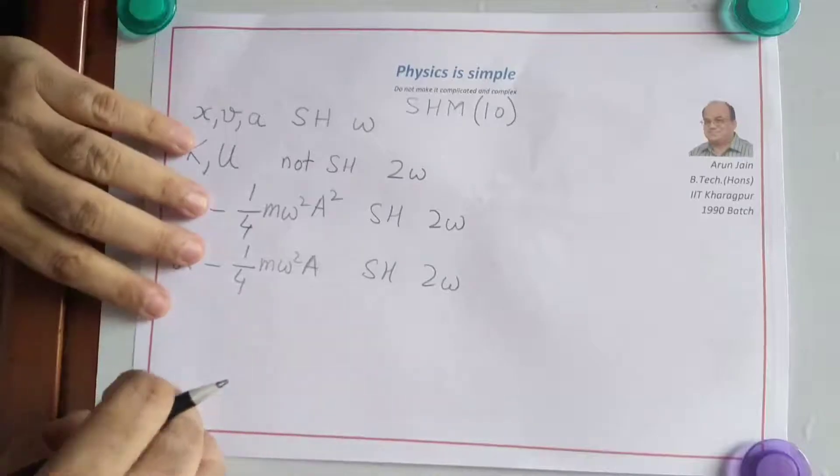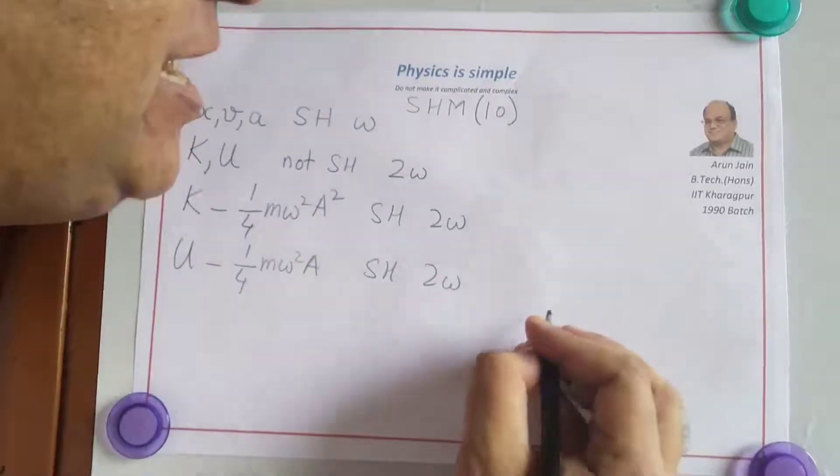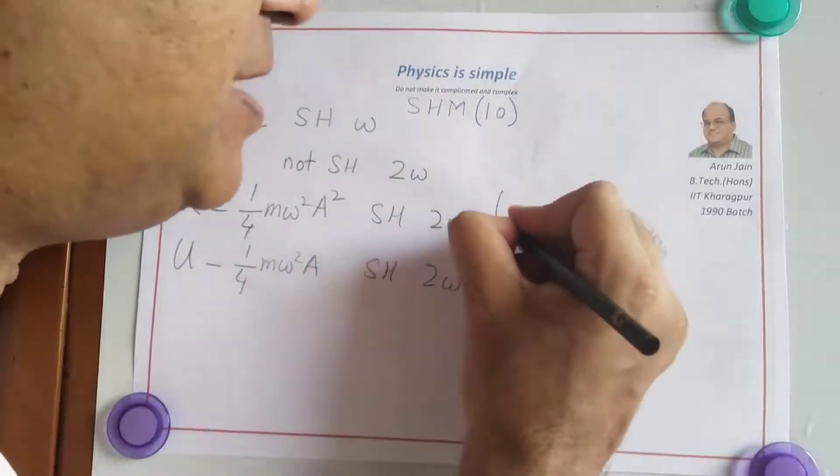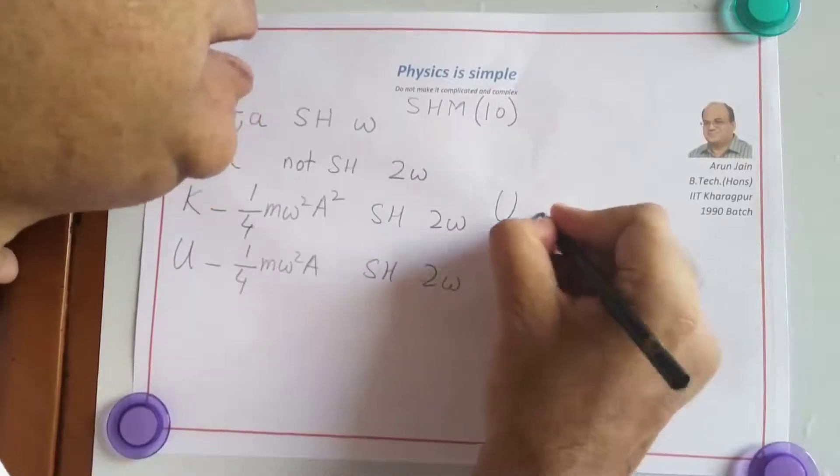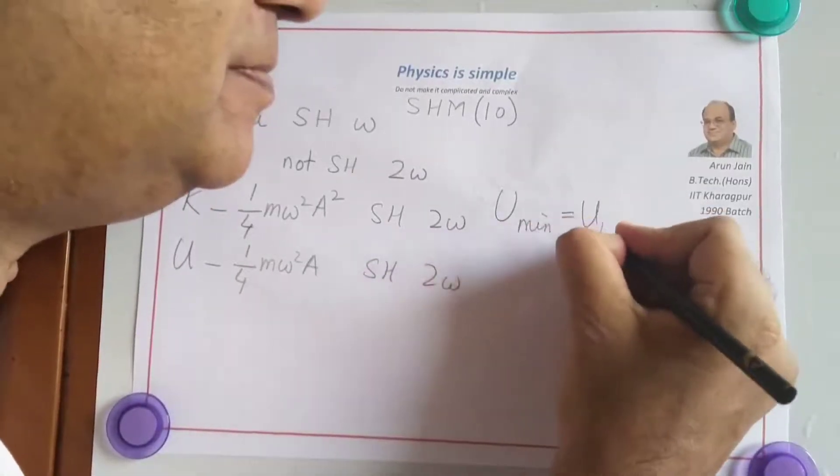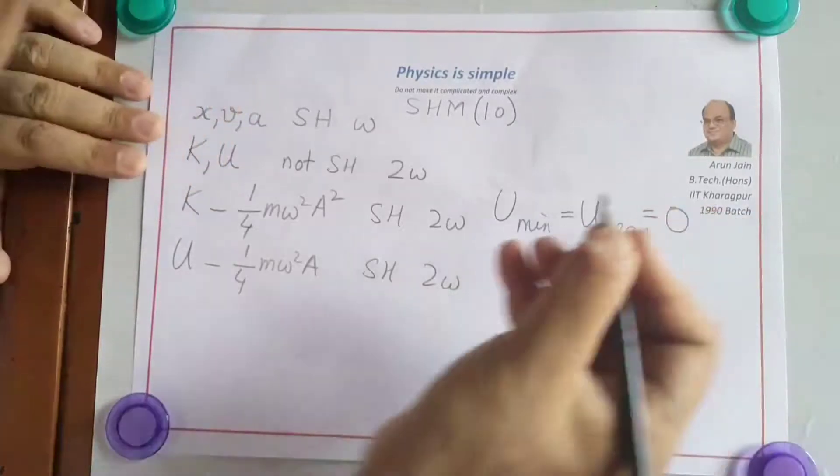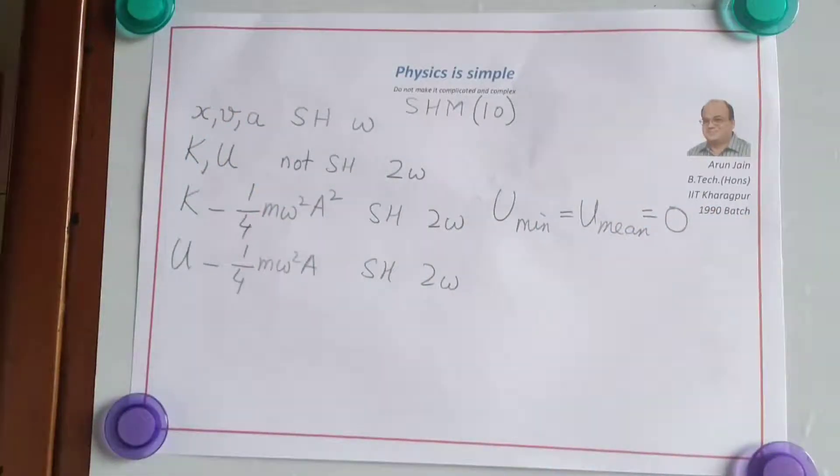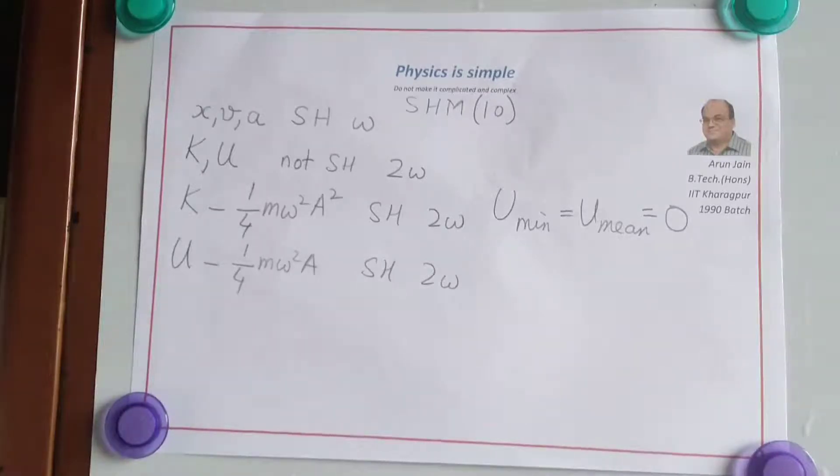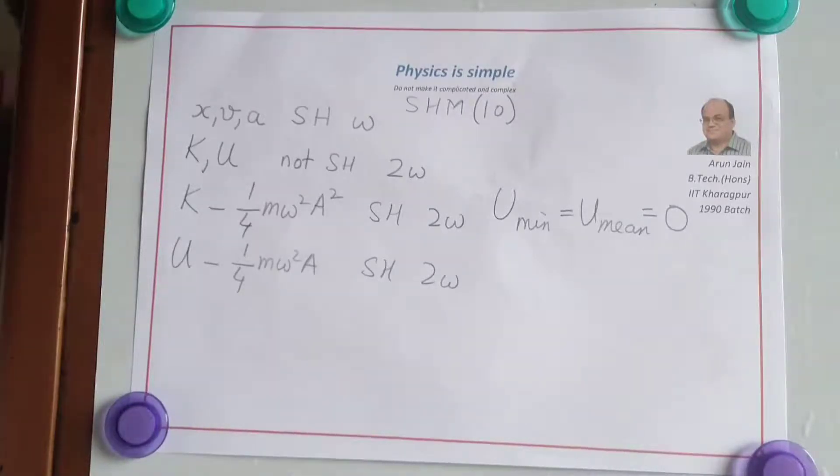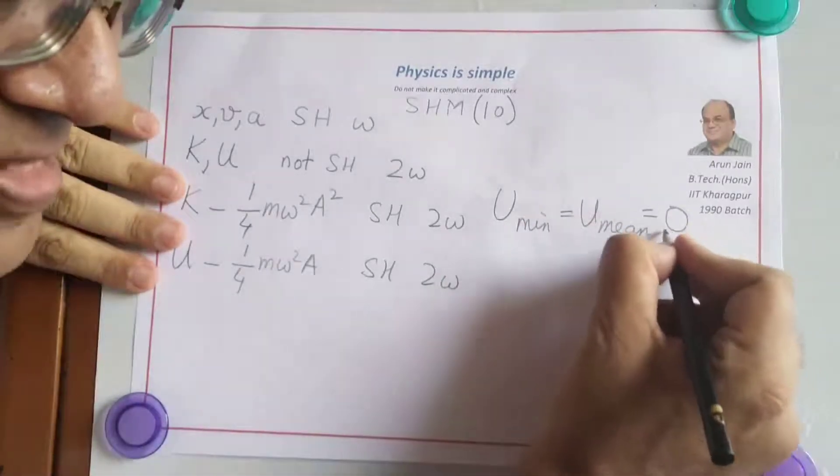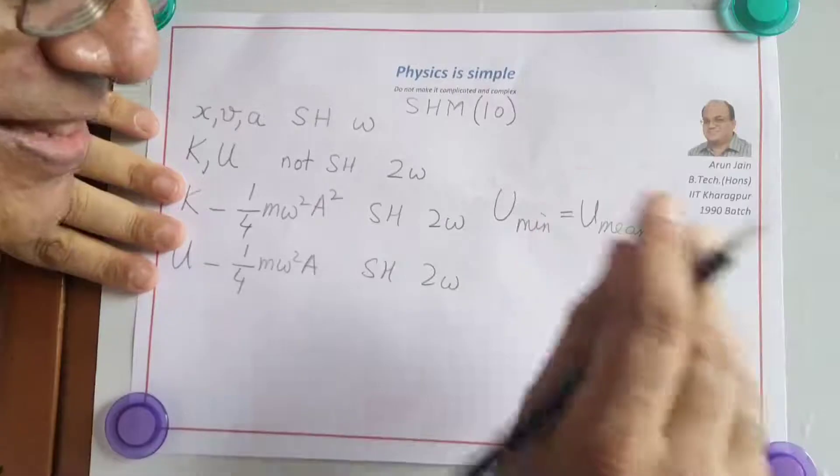We also have learned that the potential energy is minimum at mean position and that is taken as 0, because that we take as the reference line for potential energy. See, in many cases we say potential energy at the mean position is 0, but this is not necessarily 0. This is minimum.